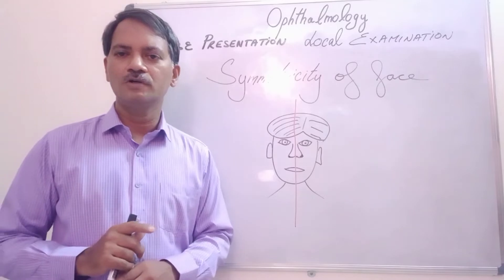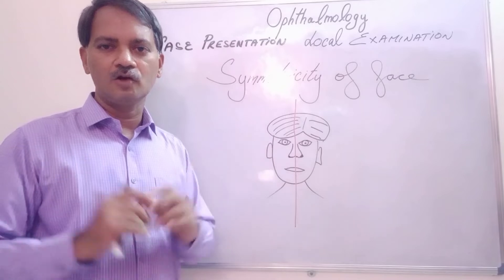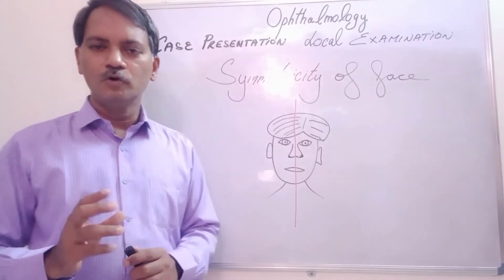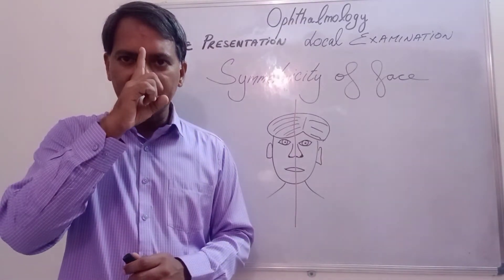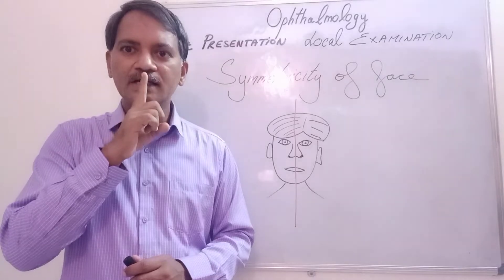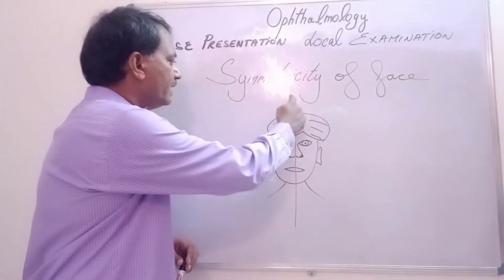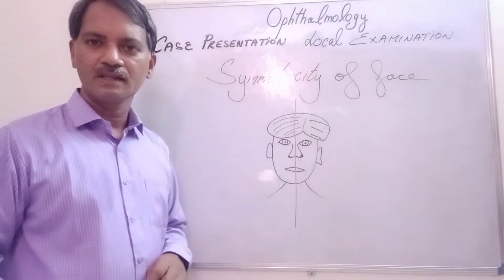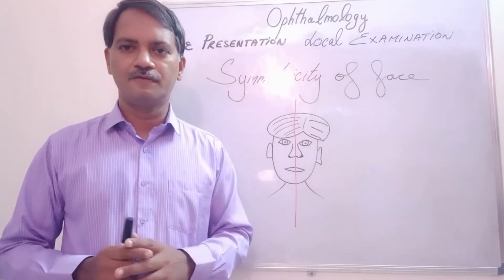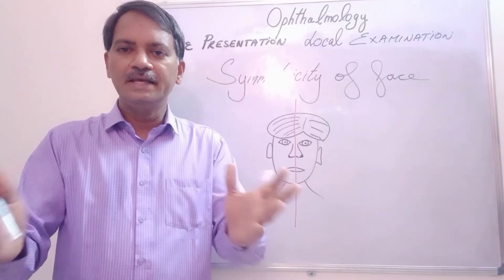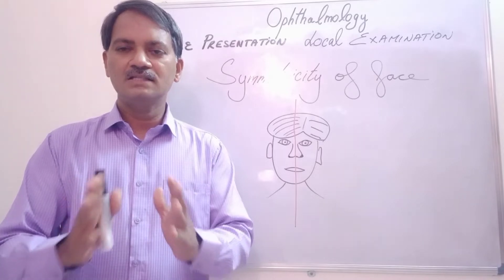The first topic I am going to discuss today is Symmetricity of the Face — whether the face is symmetrical or not. We have to think about an imaginary line passing through the center of the face. I have drawn a picture of a face here with a line passing through the center. We have to compare one half of the face with the other half. If both sides are equal, then the face is said to be symmetrical.